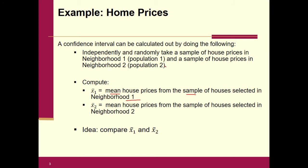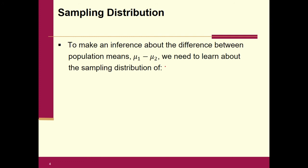The idea then is to compare x-bar one and x-bar two by doing the subtraction between the two. That's a good starting point in comparing mu one versus mu two. To make an inference about the difference between population means — meaning mu one minus mu two — we need to learn about the sampling distribution of x-bar one minus x-bar two. That will be the statistic in this section. The parameter is mu one minus mu two. We actually have one parameter: mu one minus mu two, and one statistic: x-bar one minus x-bar two.